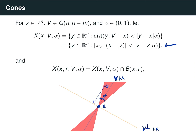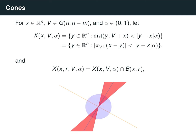We can also define a truncated cone, which has a very similar definition. The truncated cone centered at x of radius r, axis v, and aperture alpha is just the infinite cone centered at x with the same parameters, intersected with the ball B(x, r). So all we do is throw out everything from the infinite cone that's outside this ball. The picture to have in mind is a finite cone centered at x of radius r.